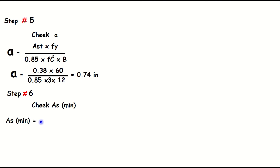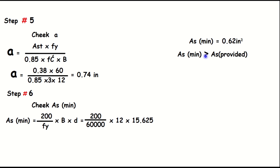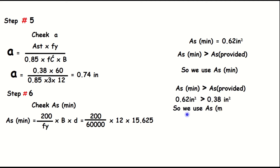Step number six: check the minimum area of steel. As_minimum = (200 divided by fy) multiplied by b multiplied by d. Substituting: As_min = (200 / 60000) × 12 × 15.625 = 0.85 square inches. Since As_minimum (0.85 sq. in.) is greater than As provided (0.38 sq. in.), we use As_minimum = 0.85 square inches.